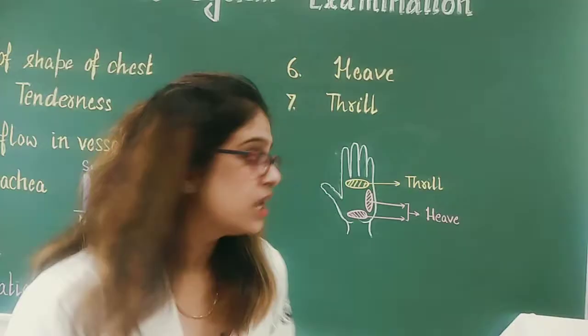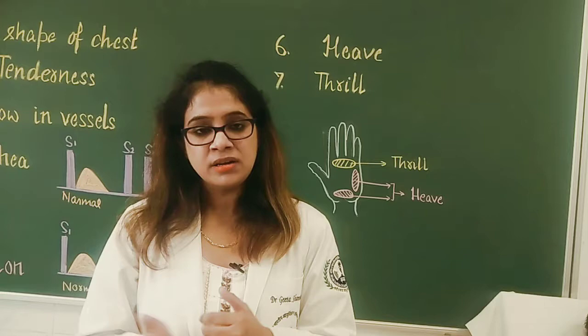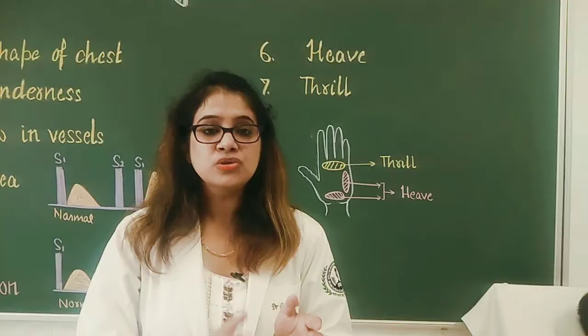Now we come to the thrill. Thrill is the tactile equivalent of a murmur — in other words, it is a palpable murmur. It is produced because of the turbulent flow of blood.